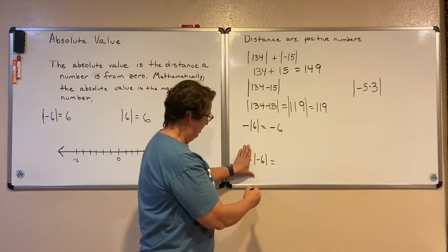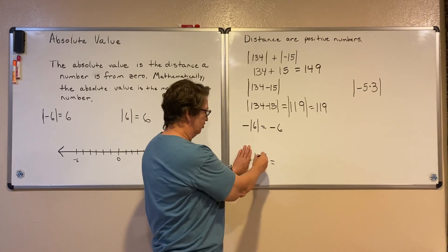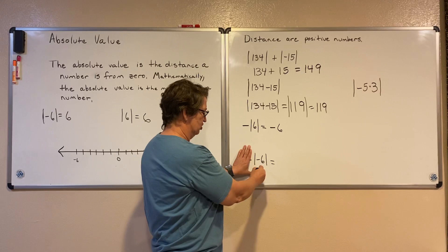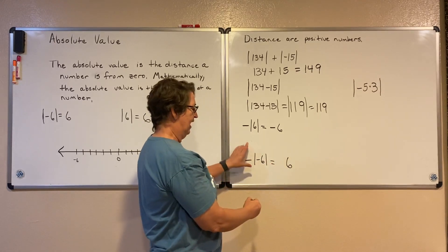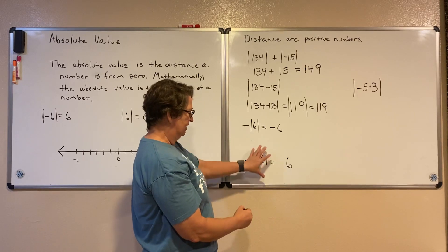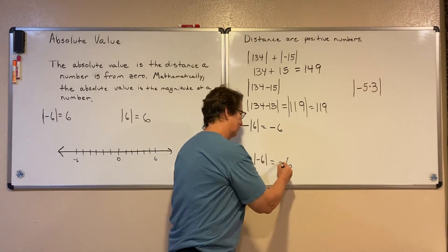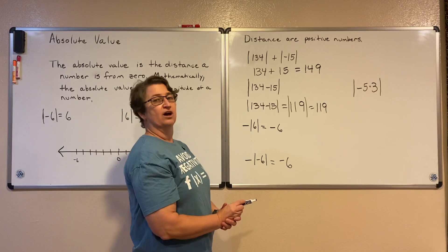Here we're going to take the absolute value of the negative 6 first. Well, negative 6 is 6 units from zero. And then we have a negative 1 times that 6, which makes it a negative 6.